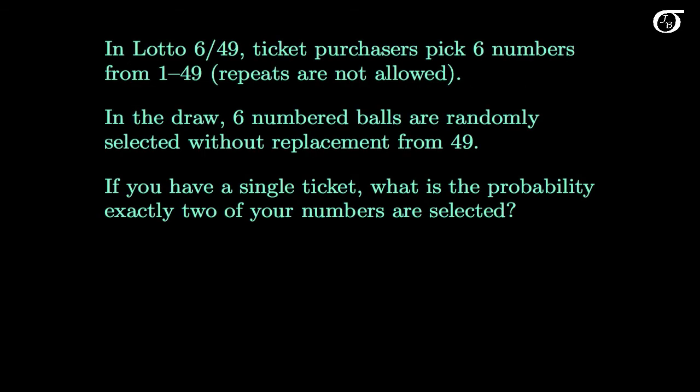In this first example we're going to talk about Lotto 649 type lotteries. In these lotteries, ticket purchasers pick six numbers between 1 and 49, and repeats are not allowed. Six numbered balls are randomly selected without replacement from the 49, and we see how many of those balls match our chosen numbers. The more balls you get right, the more money you win. If you have a single ticket, what is the probability exactly two of your numbers are selected?